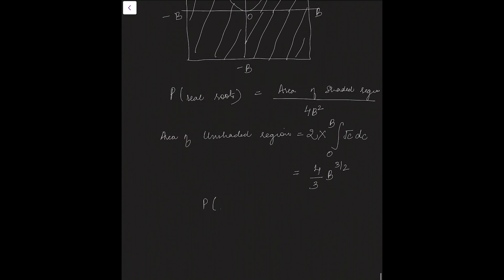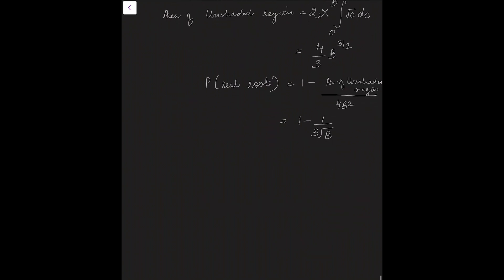So, we will find the probability of real roots that will be 1 minus area of unshaded region divided by total area of square that is 4b squared and that comes out to be 1 minus 1 by 3 root b but this is for a particular capital B.